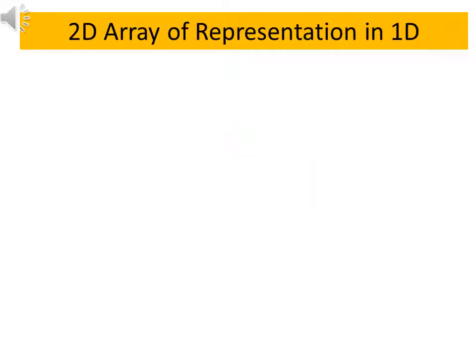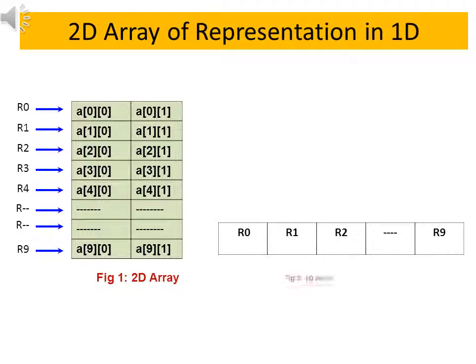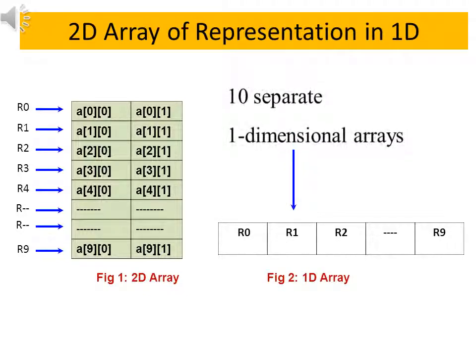Let's see two-dimensional array representation in 1D in C++. See in figure. 10 pointers are used for 10 rows when we convert this in one-dimensional array using row major. Then all rows will store in one-dimensional array which creates 10 separate one-dimensional arrays.